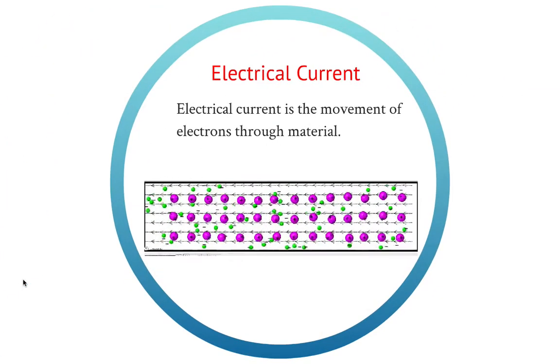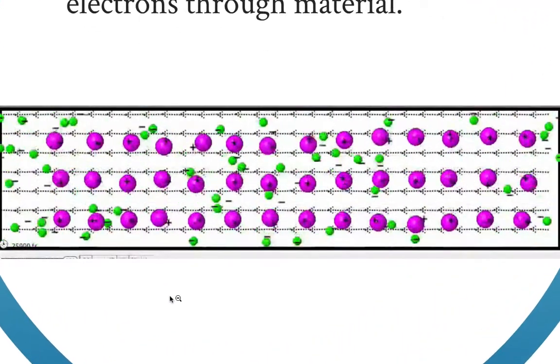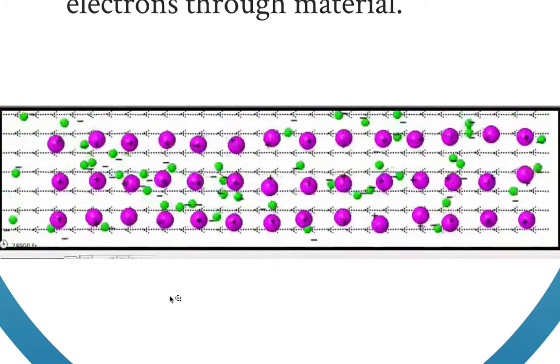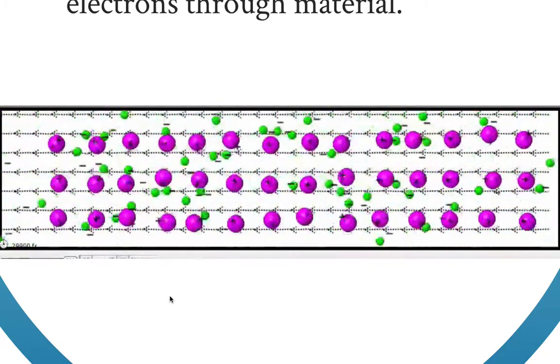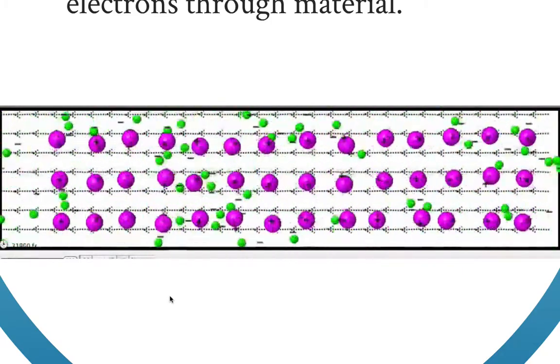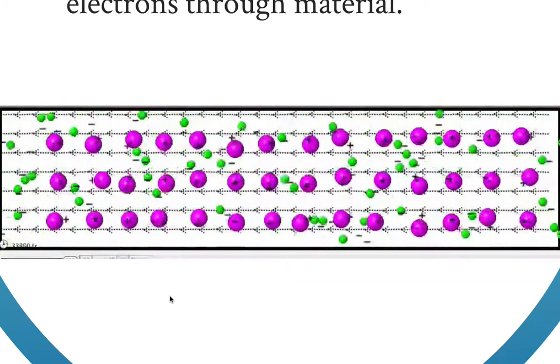Electrical current is basically the movement of electrons through material. This little animation shows the electrical current. The little green circles are electrons and they are moving from left to right. We can see that they are all scattered by the vibrations of atoms.